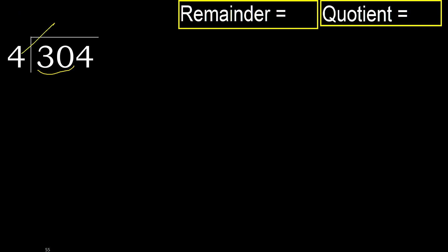Multiply by which number is nearest to 30 but not greater. 4 multiply by 8 is 32, is greater. Multiply by 7: 28 is not greater. Subtract: 30 minus 28 is 2.